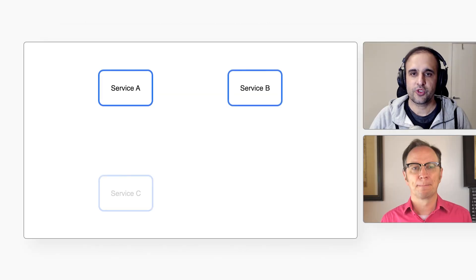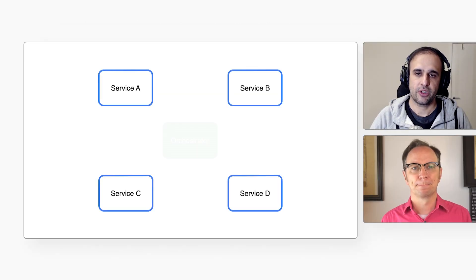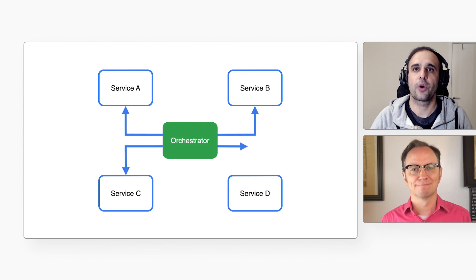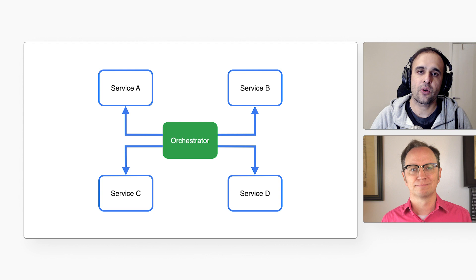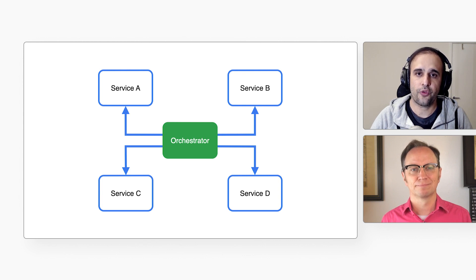And how can we avoid that coupling? You can use a service orchestrator to define which service needs to be called in what order, and let the orchestrator make those calls. That way, services don't know about each other and they don't call each other directly. Google Cloud has Workflows for service orchestration.